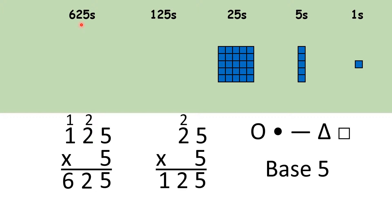So how is Rigglesfordian place value similar to and different from normal place value? Well, the place values represent different quantities. But just as with our place value system we can keep going along the place values by multiplying by ten, in the Rigglesfordian number system we can go along the place values by multiplying by five.